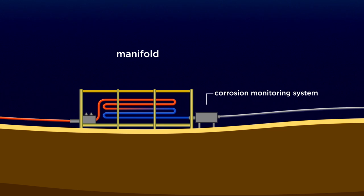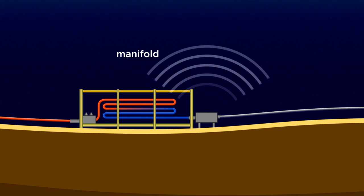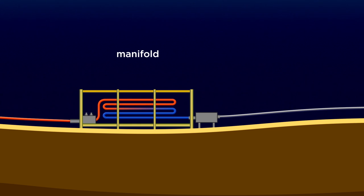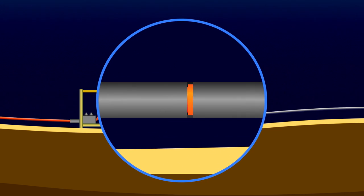There is also a corrosion monitoring system that captures real-time data from the production pipeline and transmits on shore for analysis and evaluation. The CMS is supported by a specially designed system that uses an intelligent PIG to examine the pipeline's internal diameter and thickness.